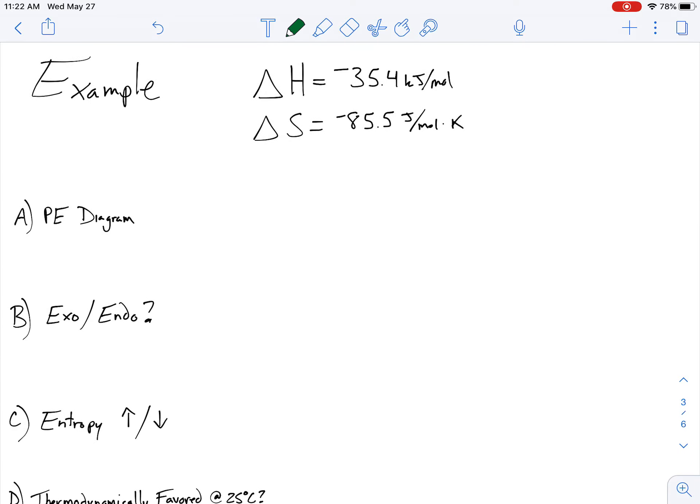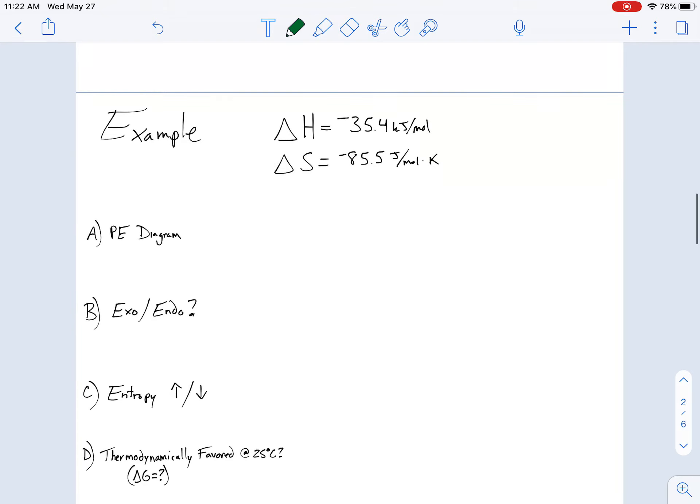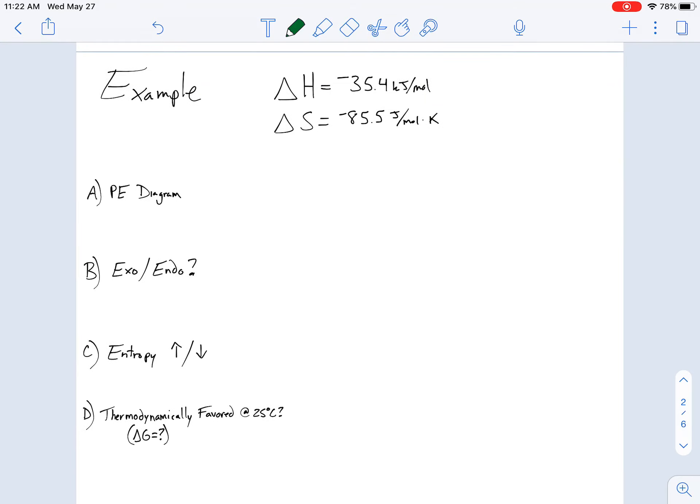Let's take a look at some examples. So, here I'm giving you delta H, I'm giving you delta S. First thing I want is a potential energy diagram. You guys could try all of these first if you wanted to pause. Potential energy diagram. I'm looking at delta H for a potential energy diagram. If this is negative, is that exothermic or endothermic? Okay, that means it's exothermic. That means my potential energy diagram would kind of look like this.